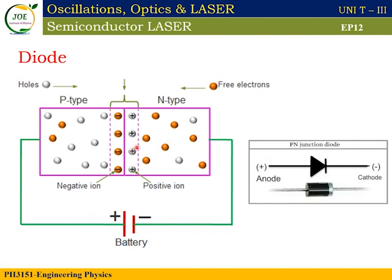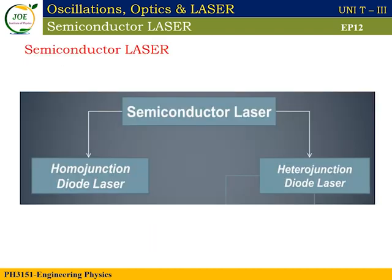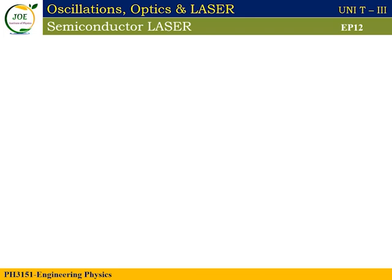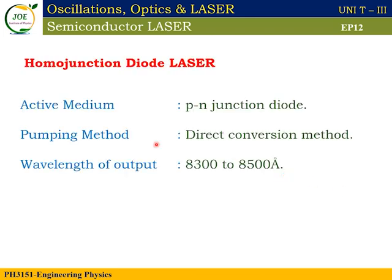This is the semiconductor laser. The semiconductor laser has two types: the homo junction diode laser and the hetero junction diode laser. Let's look at the first portion — the homo junction diode laser. We know that the laser requires an active medium. This homo junction diode laser uses the PN junction diode as the active medium. The excitation process increases the number of electrons to a higher energy state using the direct conversion method.